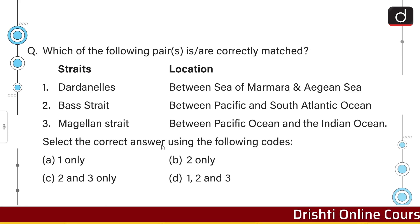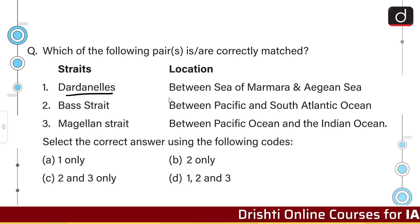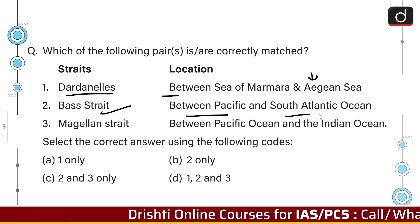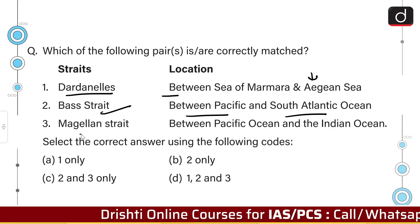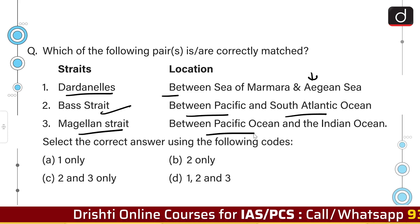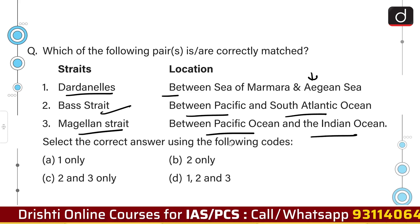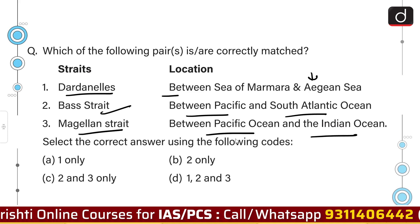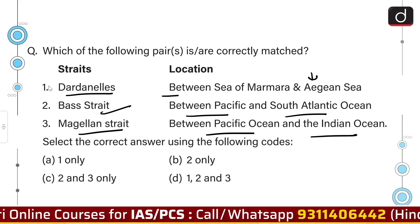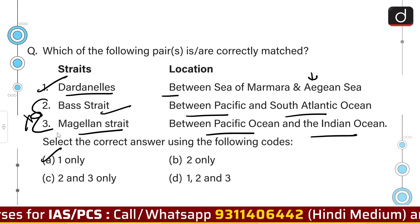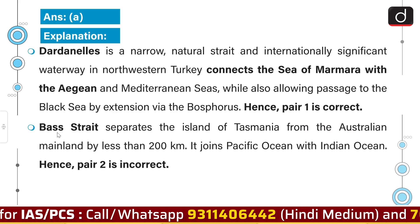Which of the following pairs is correctly matched? Pair one: Dardanelles — between Sea of Marmara and Aegean Sea. Pair two: Bass Strait — between Pacific and South Atlantic Ocean. Pair three: Magellan Strait — between Pacific Ocean and Indian Ocean. The first pair is correctly matched while the rest two are not. The correct answer is option A — one only.